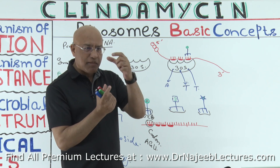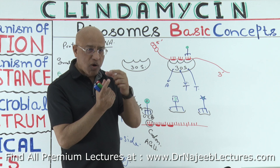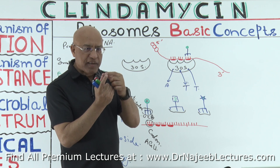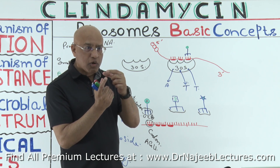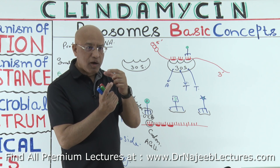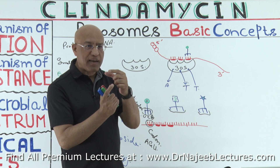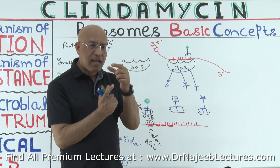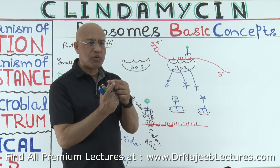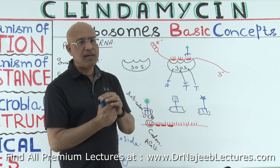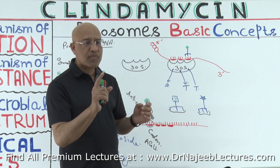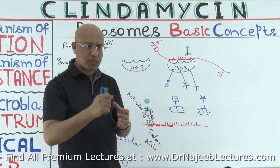It's very important to understand the function of the 30s subunit. The 30s subunit is involved in decoding the messenger RNA, including matching of the codon on messenger RNA with the anticodon on transfer RNA.